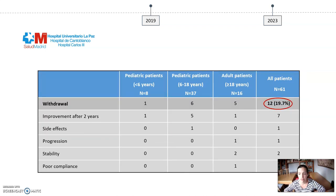12 patients have finished the treatment, most with improvement after 2 years of treatment. In these patients, we made a progressive reduction of alpelisib after a consensual decision.